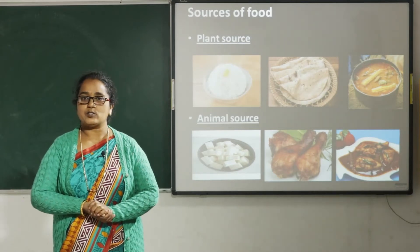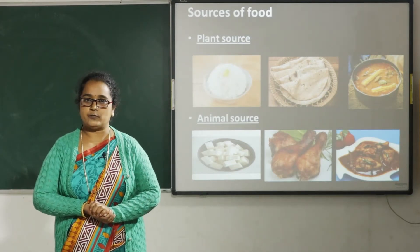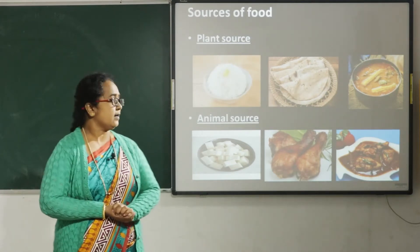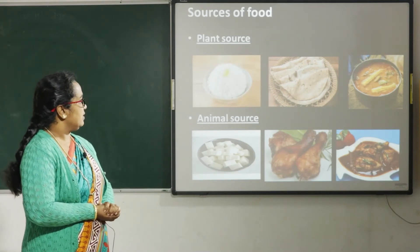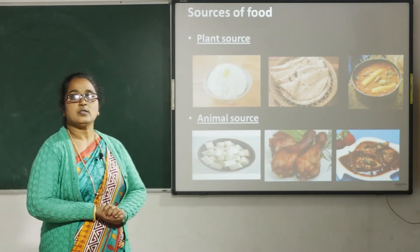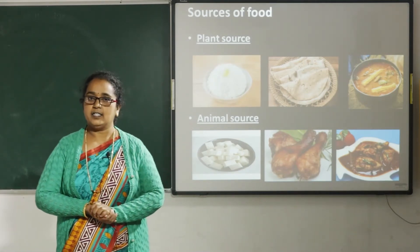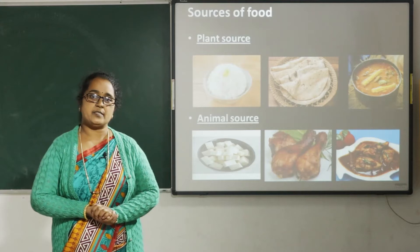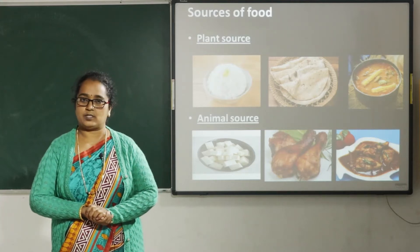What are the plant source food items? Plant source food items are rice, chapati, sambar, dosa, idli, etc. These food items are prepared from plant sources.